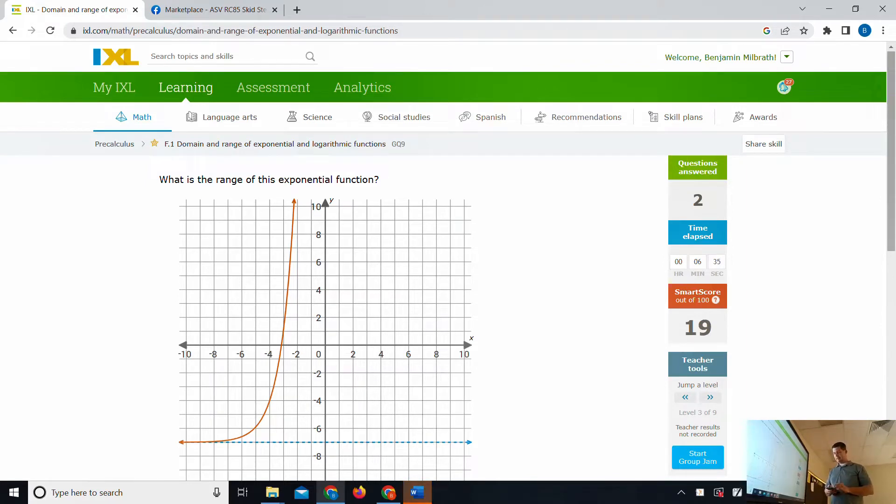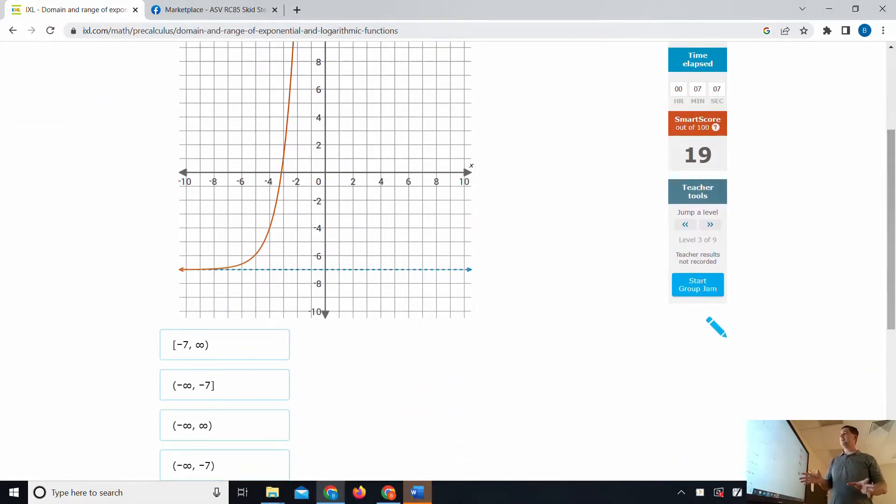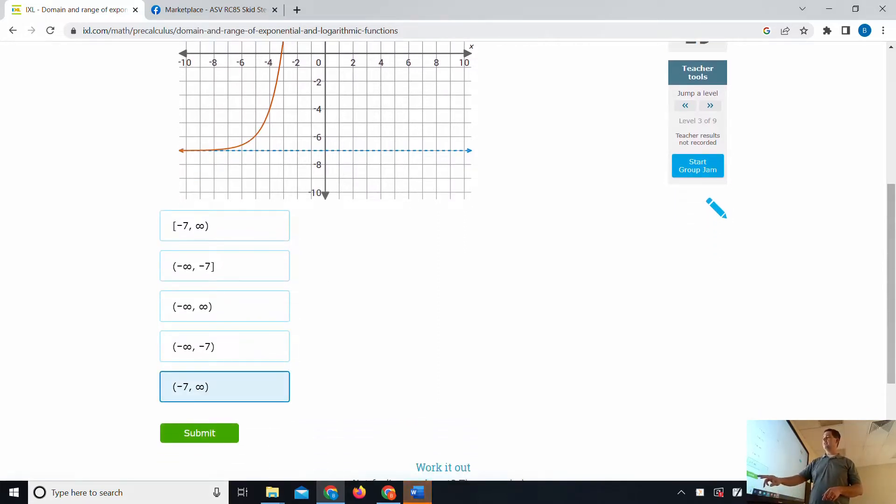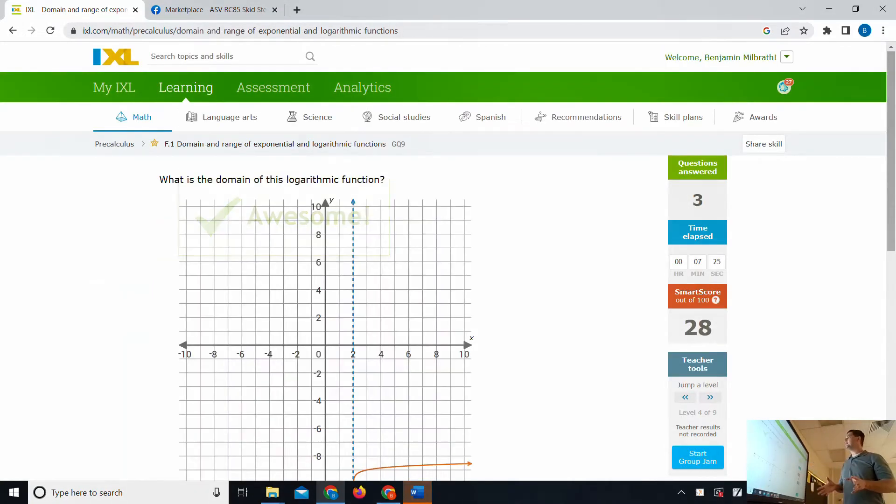Hold on, I got a message. I sent a buddy something I thought he should buy. It was a bourbon dispenser. Alright, back to this one. The range of this exponential function - this one will never get lower than negative 7, it's going to rise to infinity. So it's going to be anything bigger than negative 7.